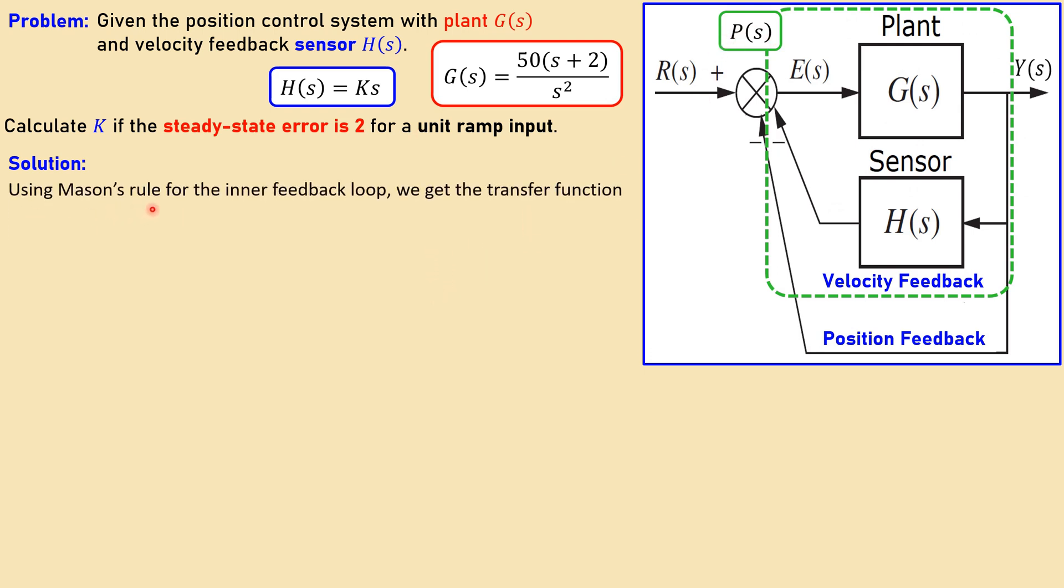So I just call them P. And using Mason's gain rule or Mason's rule for the inner feedback loop, we get the following transfer function. I call it just P. That is then the forward path over 1 plus the loop, which is then the G times H, only that part given here in green.